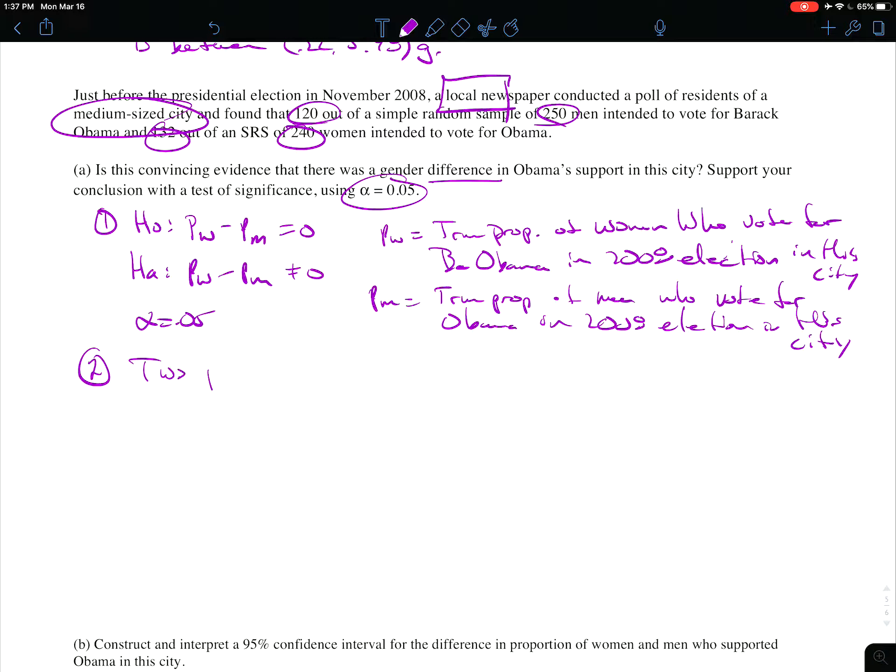Two-prop z-test, which would be z equals p-hat_W minus p-hat_M minus the null p_W minus the null p_M over... Now this is the two-prop z-test, so this is our time to combine, to pool our sample. So p-hat_c times q-hat_c over n_1 and n_2, and p-hat_c is x_1 plus x_2, or I guess this is W and M, over n_W plus n_M. Awesome. So either by name or by formula, there that is, and our conditions.